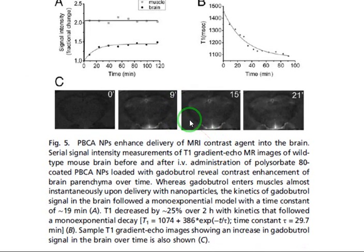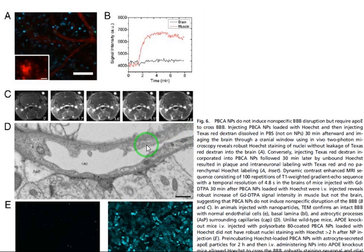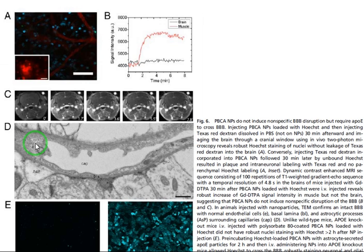Here PBCA nanoparticles were used with gadolinium as an MRI contrast agent, and again stronger signals are obtained. Importantly, this slide shows that by using PBCA nanoparticles for crossing the blood-brain barrier, the tight junctions and endothelial cells remain intact — meaning they are still in their initial form and have not been damaged.